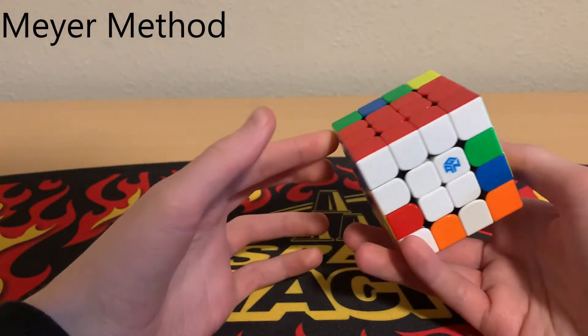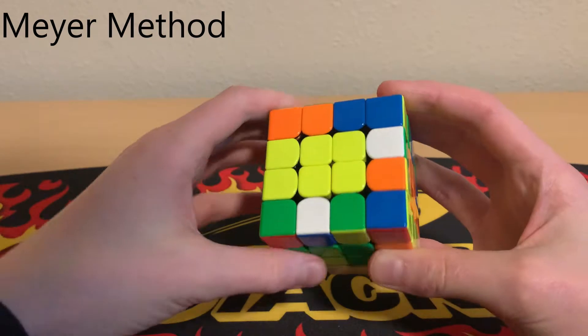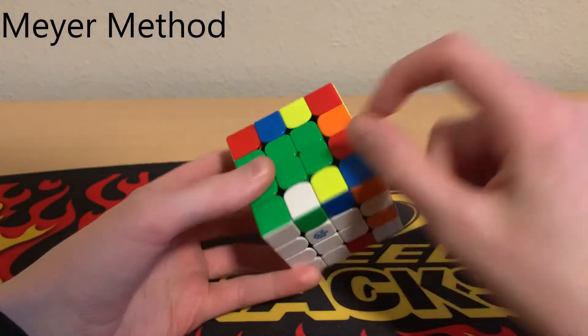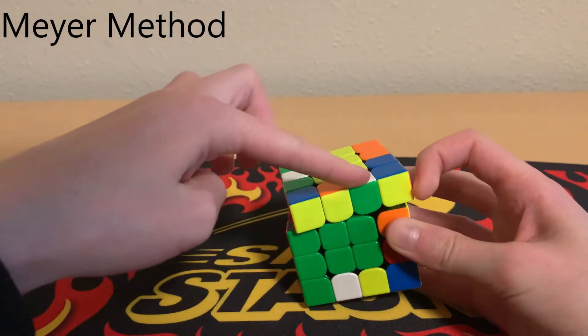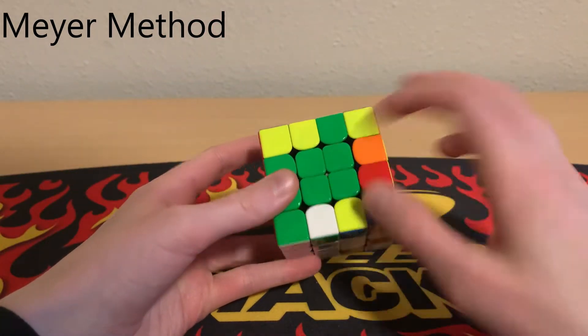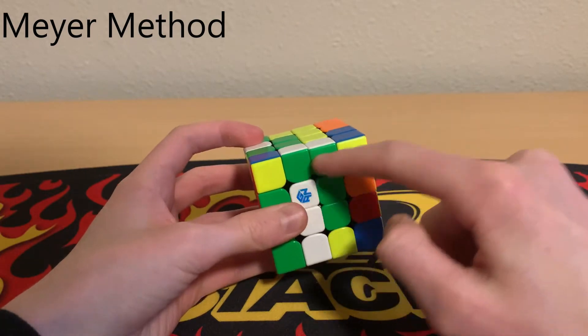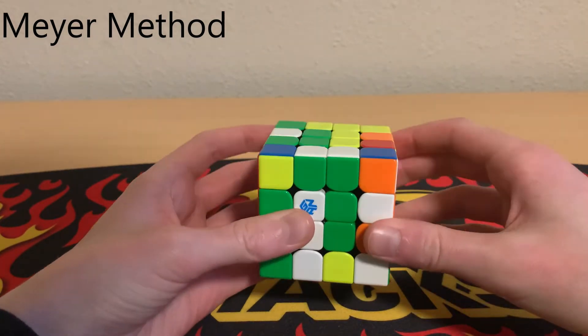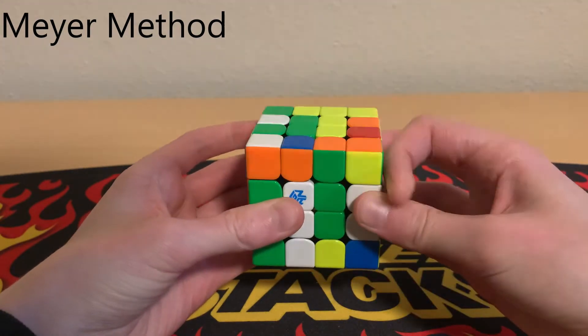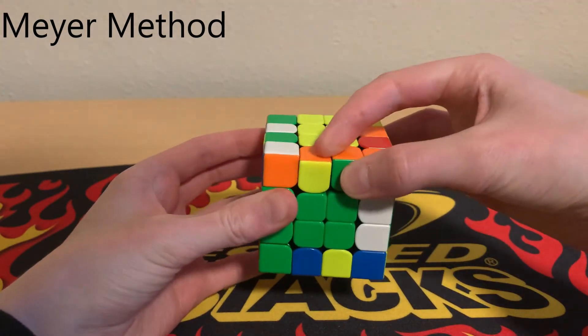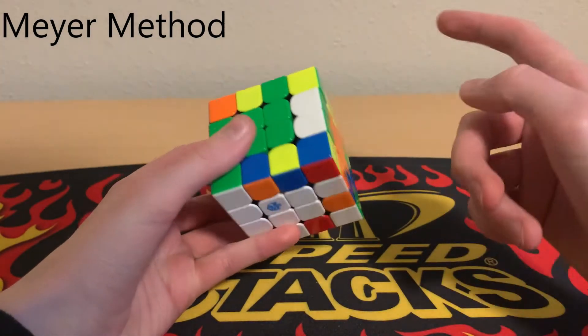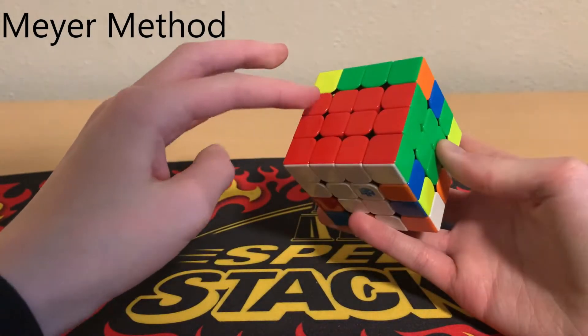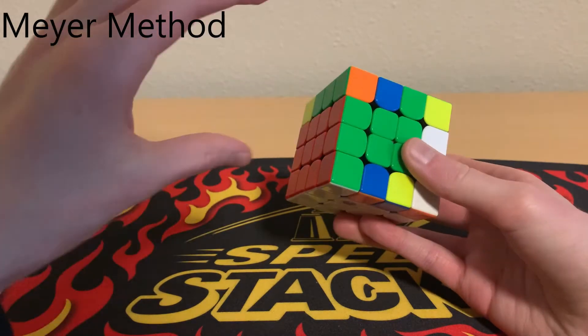Now all we need to do is solve one more edge. You just find two pieces—maybe you even have an edge pre-made, I don't. I see this white-green and this white-green. We can bring this over to there, and then with one move we can pair them up and then insert it into this, and then undo. That solves a piece.